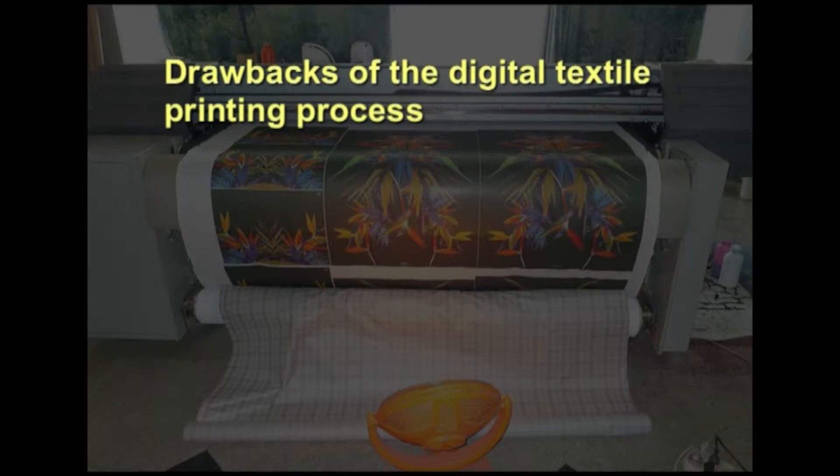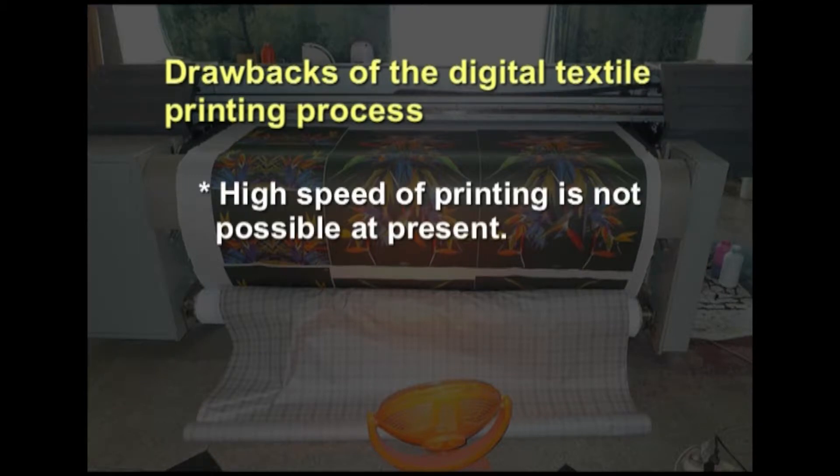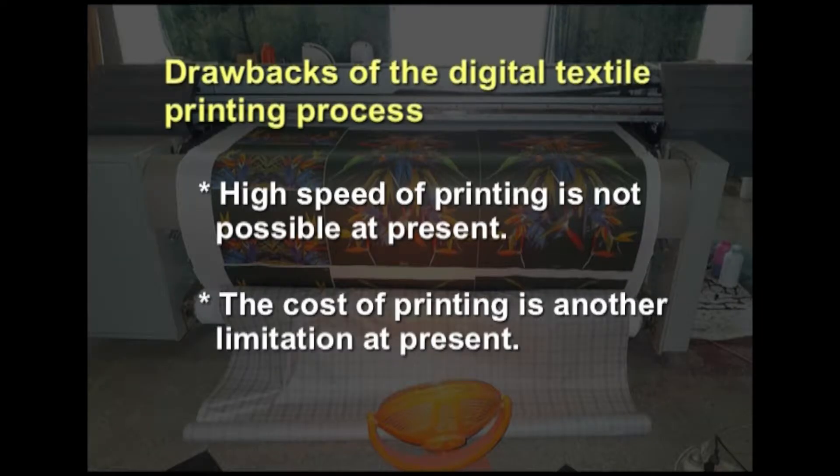Having seen the advantages of digital printing, we will see the drawbacks. High speed of printing is not possible at present, even though digital printing companies are trying to address this. Since there is no need to make screens or cylinders, the time saved is used for continuous printing, and manufacturers are able to produce and meet demands in time. The cost of printing is another limitation at present, but it may be overcome in the near future.